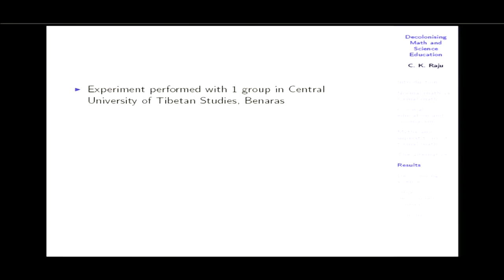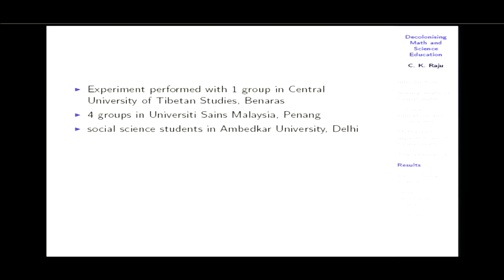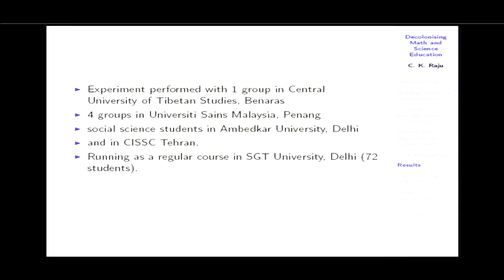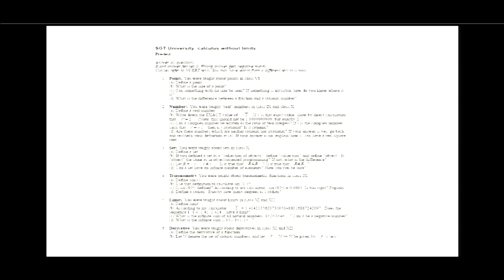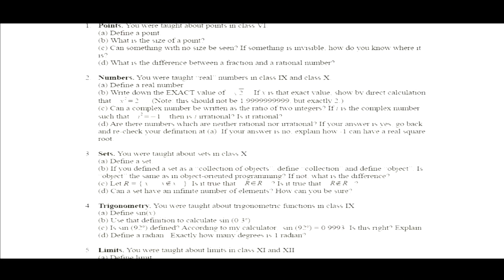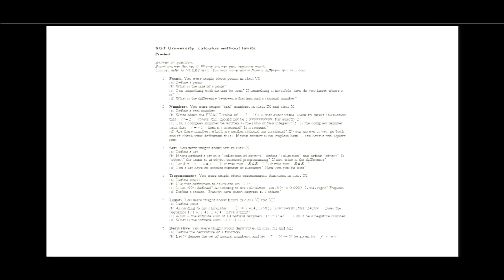The experiments were performed with one group at the Central University of Tibetan Studies, four groups at USM Penang, social science students at Ambedkar University Delhi, in CISSC Tehran, and it's currently running as a regular course at HGT University Delhi with 72 students. Most students — including postgraduate students — flunked the pre-test and half of them dropped out. There was conceptual confusion about calculus across the board.